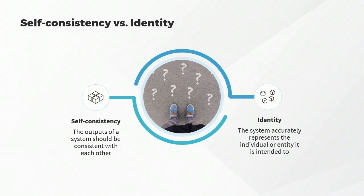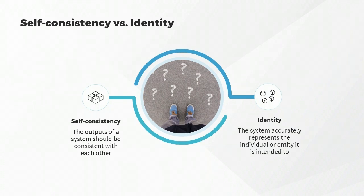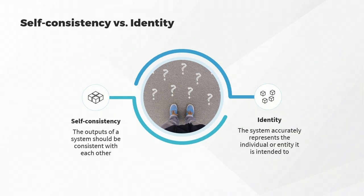To summarize, self-consistency relates to the internal consistency of a system's output, while identity relates to the accuracy with which the system represents a specific individual or entity. Both properties are important for advanced ChatGPT prompts and can impact the overall effectiveness of the system.